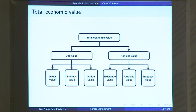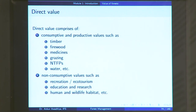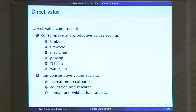What is a direct value? A direct value is something in which you are using the forest directly, and it is comprised of two things: consumptive utilization and non-consumptive values. The consumptive or productive values comprise things that you are consuming. Suppose we have a tree in a forest and I use this tree to get timber — I go into the forest, cut this tree, and extract timber out of it.